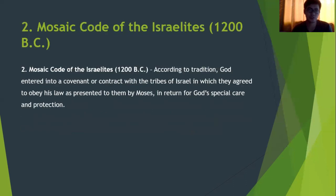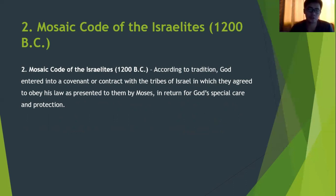Second, we have the Mosaic Code. According to tradition, God entered into a covenant or contract with the tribes of Israel, in which they agreed to obey His law as presented to them by Moses, in return for God's special care and protection of Israel.